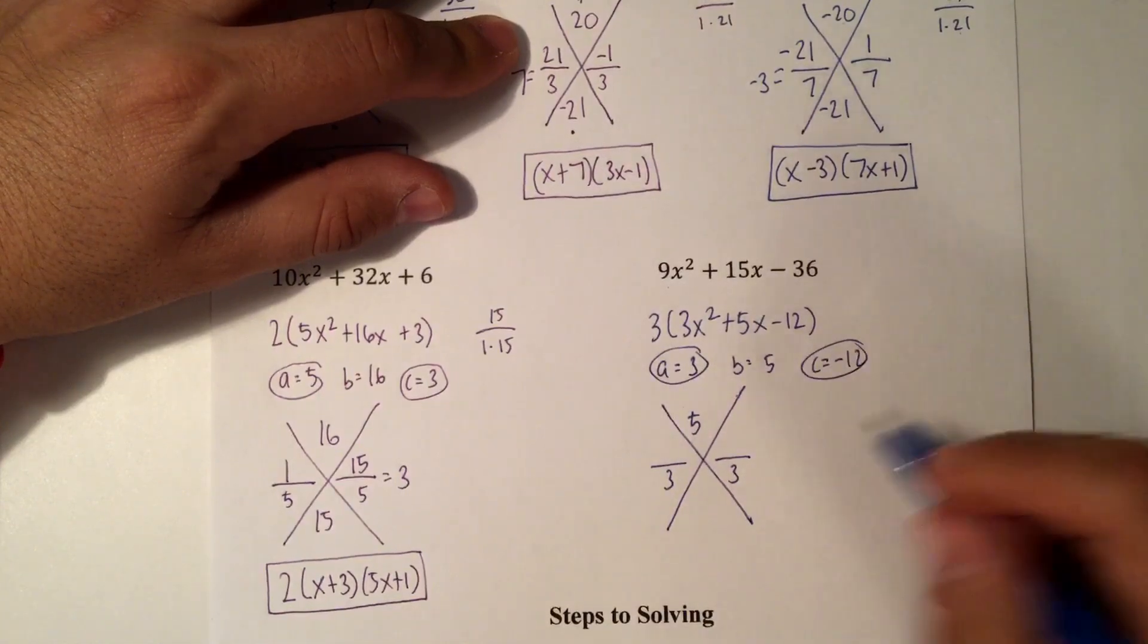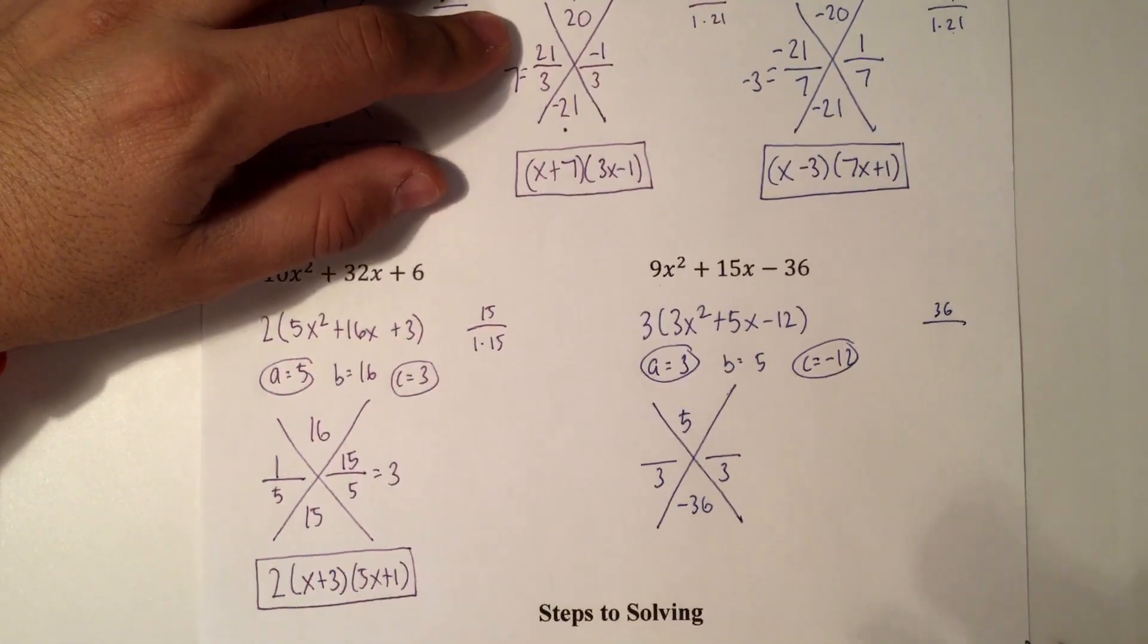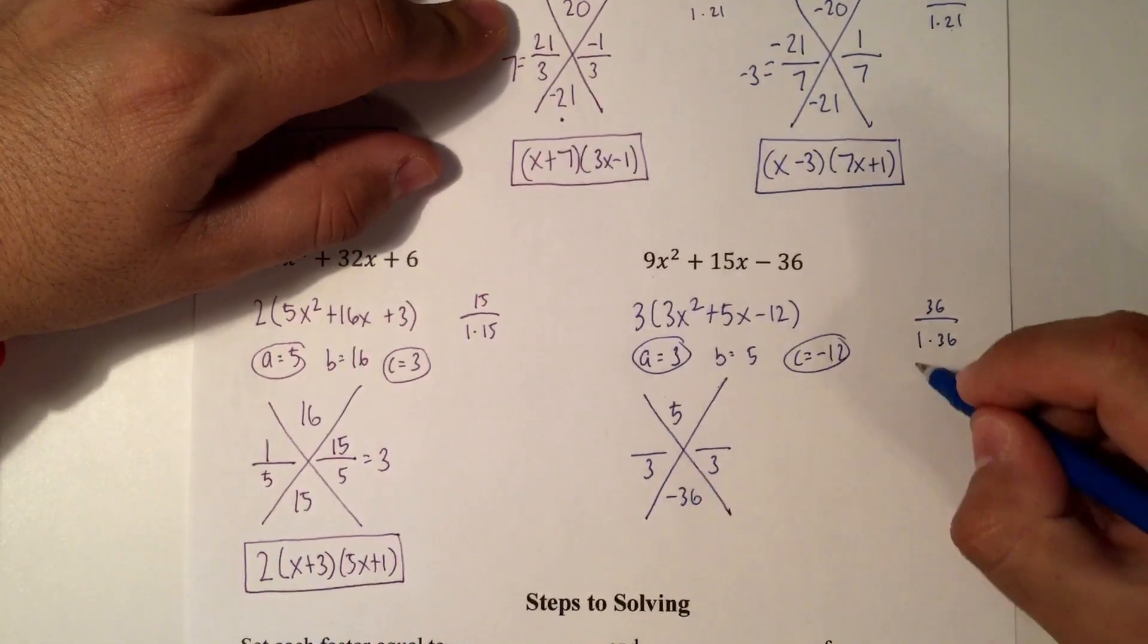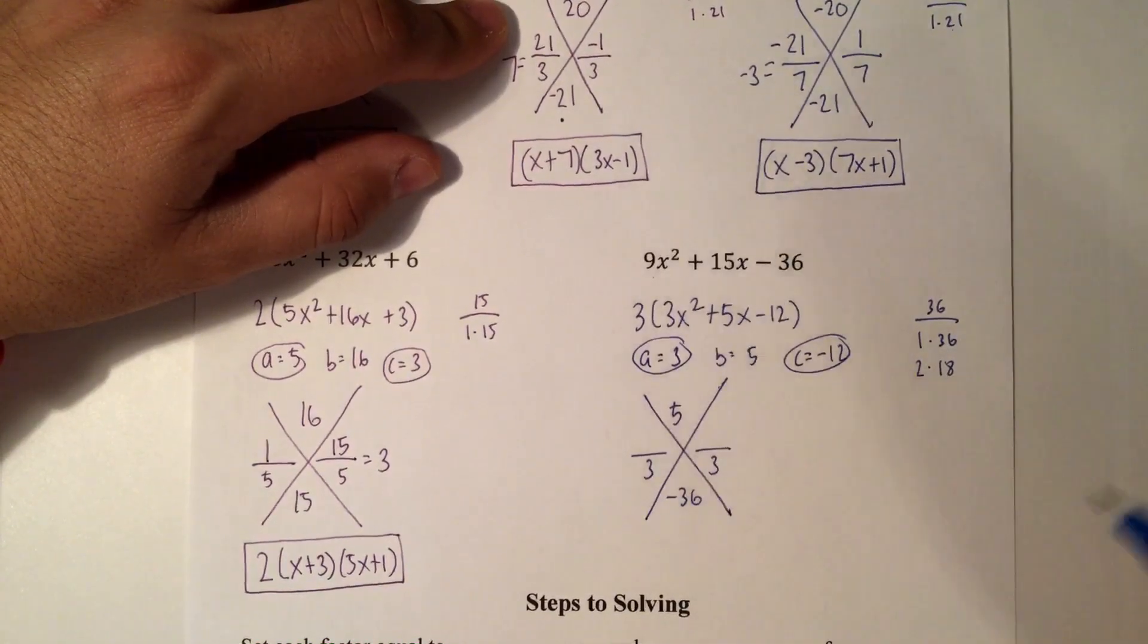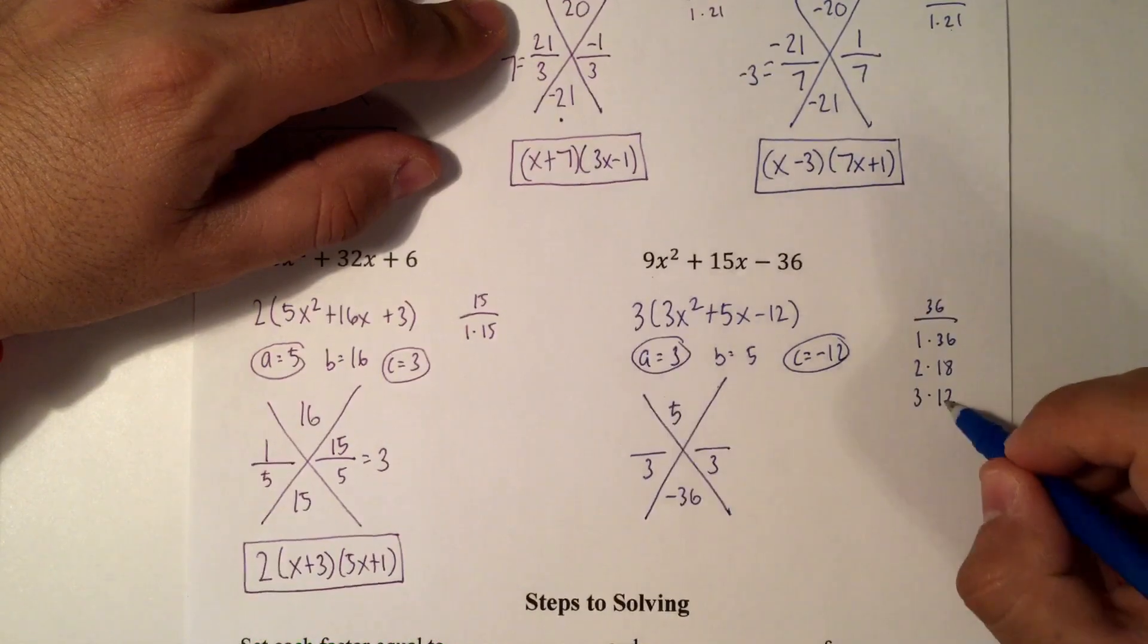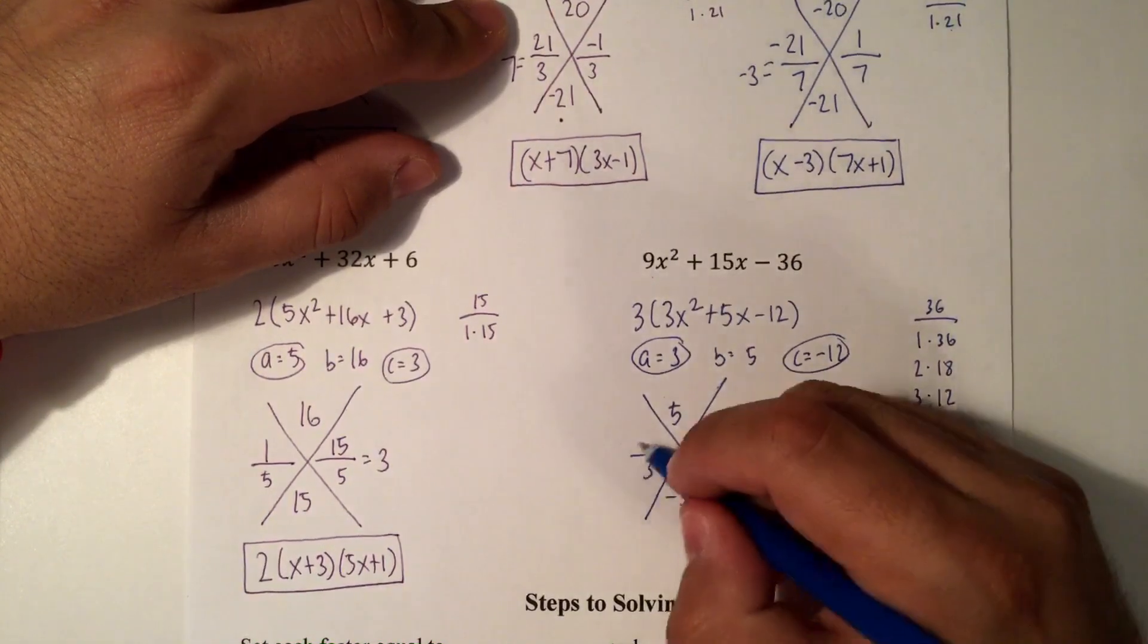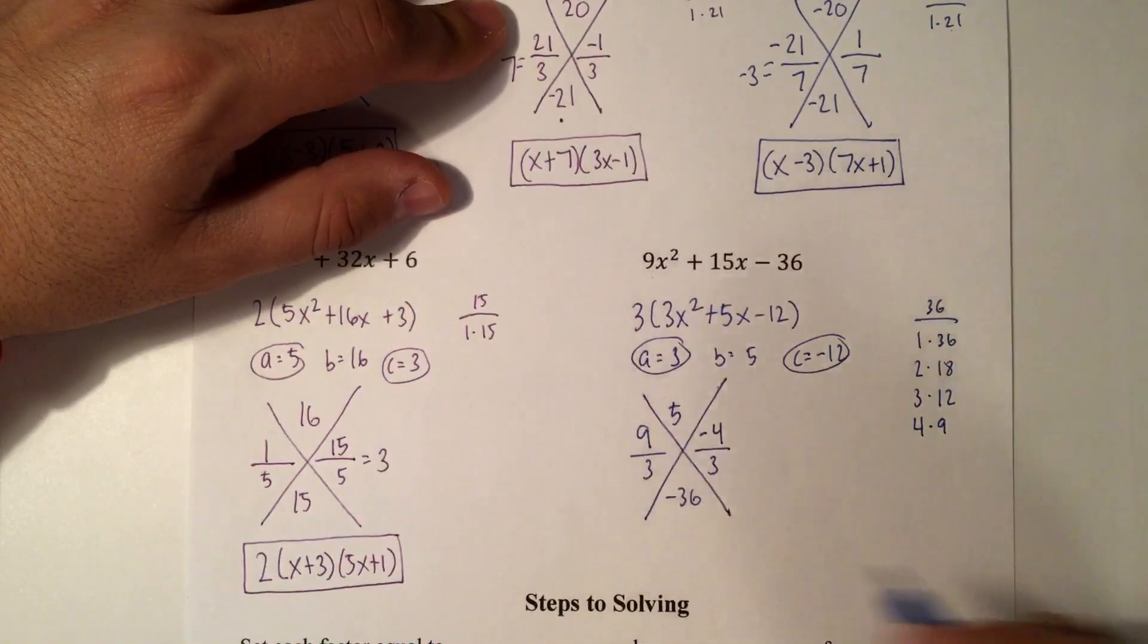For this one, my first factors would be 1 times 36. 1 plus 36 is 37. 36 minus 1 is 35, so that doesn't work. 2 times 18. 2 plus 18 is 20. 18 minus 2 is 16. That does not work. So let's try 3 and 12. 3 plus 12 is 15. 12 minus 3 is 9. That doesn't work. Let's try 4 times 9. 4 plus 9 is 13. 9 minus 4 is 5. There we go. So 9 minus 4.